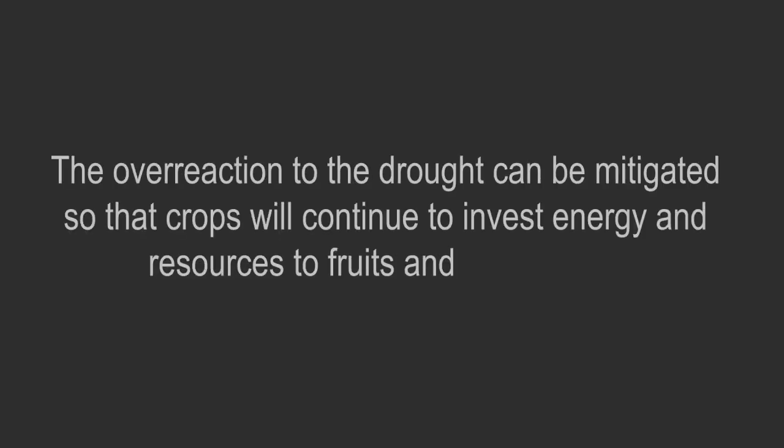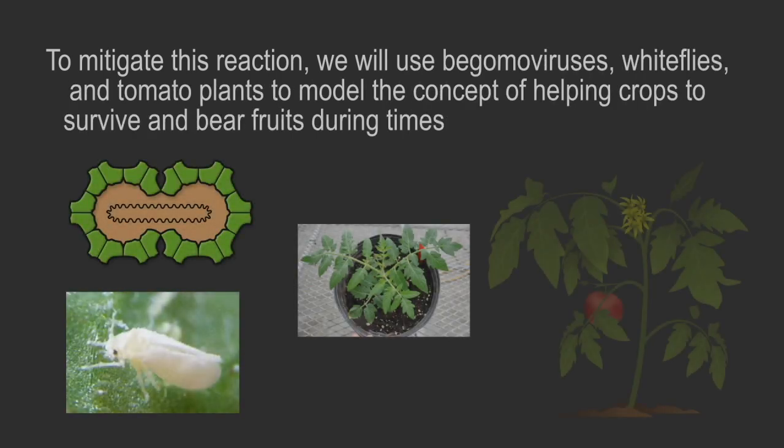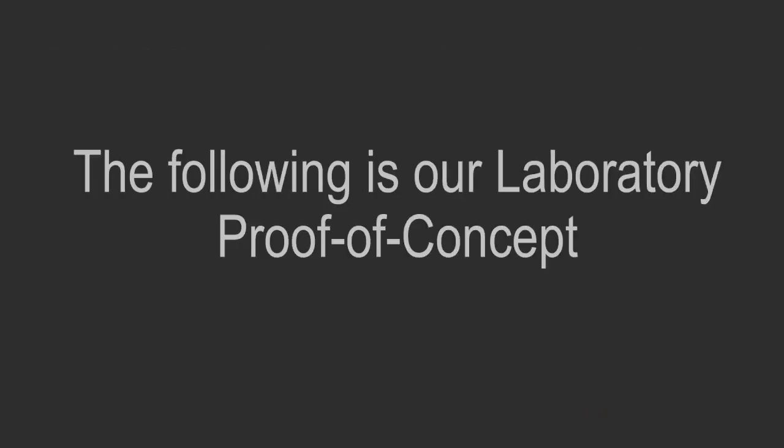This overreaction can be mitigated so that the plants will continue to invest the energy and resources into the fruits and vegetables. This will be accomplished using Begomoviruses, whiteflies, and tomato plants to model this concept of helping crops to survive and bear fruits and vegetables during drought stress. This is our proof of concept.